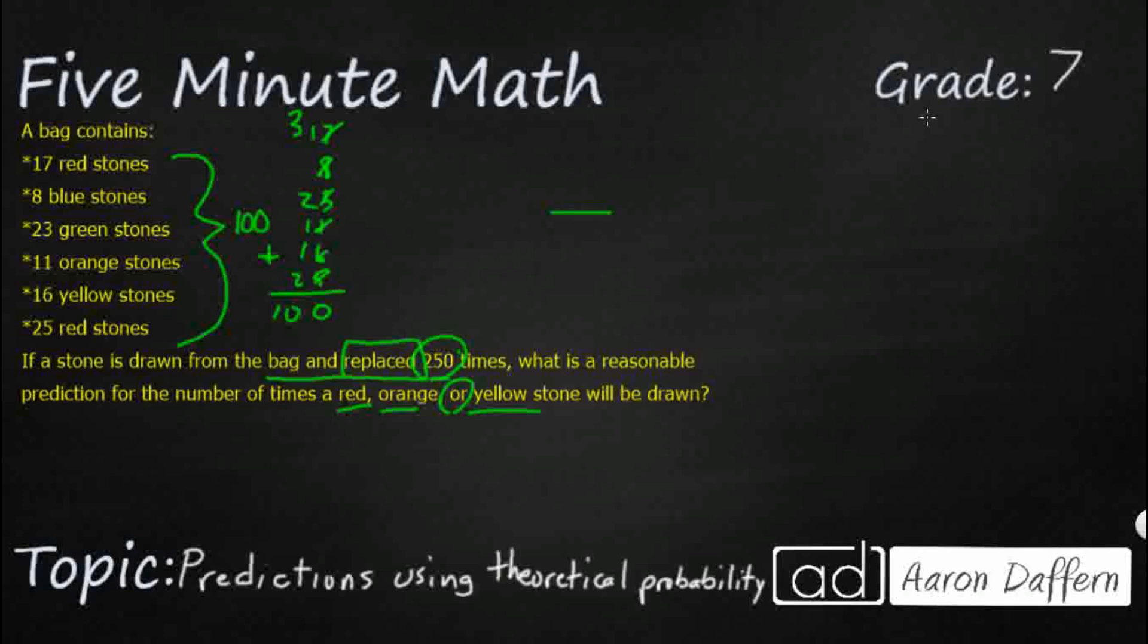So I'm looking for my total again. I've got that 100. Now let's see red, orange, and yellow. So red is 17 plus, let's add that with 11 and 16. Let's just add those three. That is going to be 44. So I've got 44 over 100.